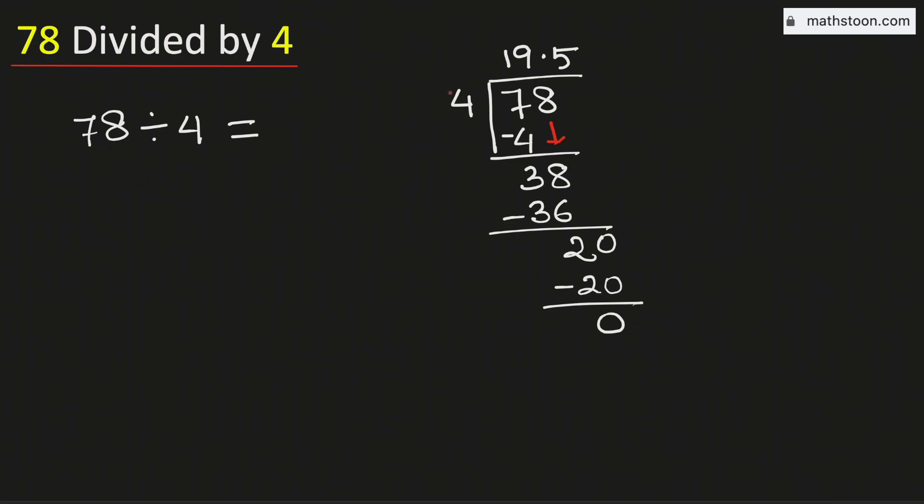Therefore, 78 divided by 4 is equal to 19.5, and this is our final answer.